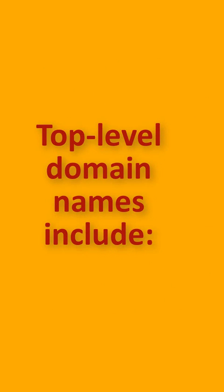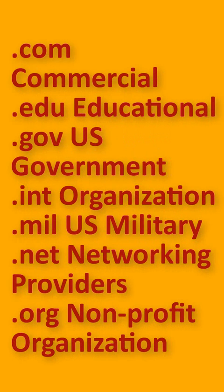These domain names have come up in exam questions, often as a match-the-following type question, which is straightforward once you know them. So let's go through them: .com is for commercial, .edu is for educational, .gov is for government, .int is for international organizations, and .mil is for military.